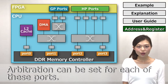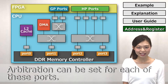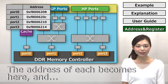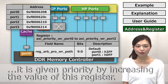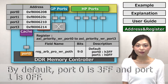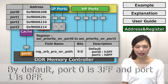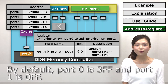Arbitration can be set for each of these ports. The address of each port is given priority by increasing the value of this register. By default, Port 0 is 3FF and Port 1 is 0FF.